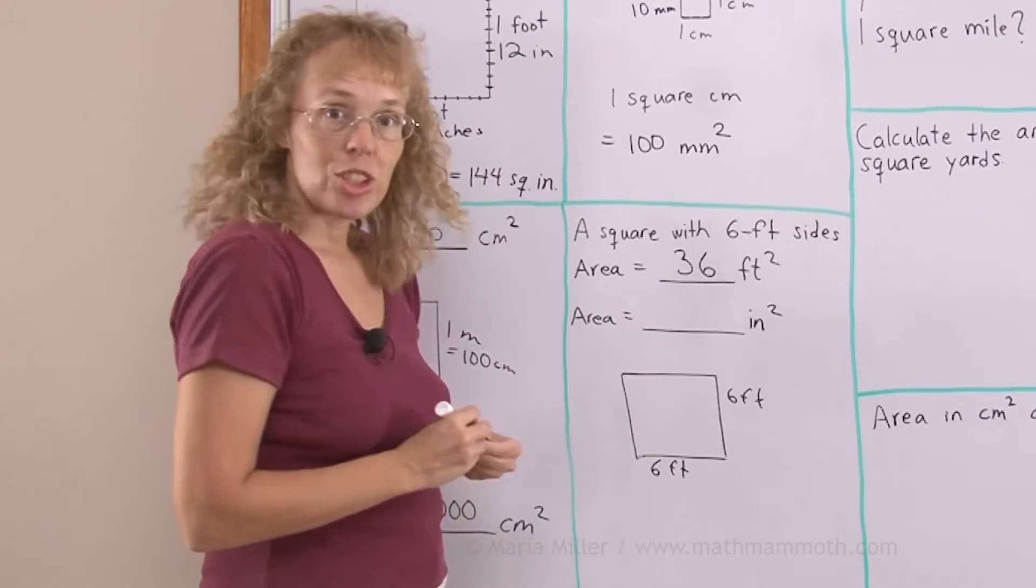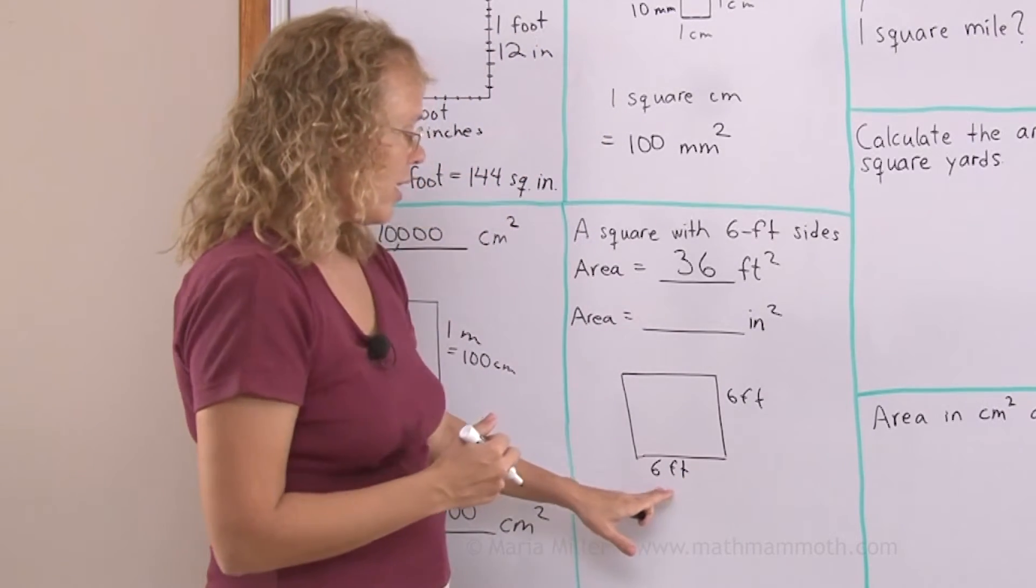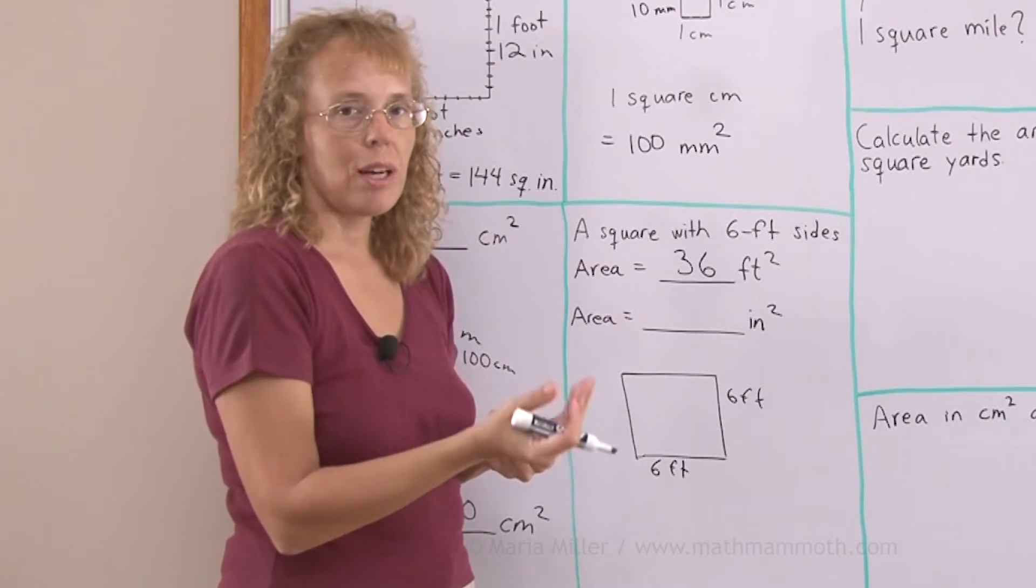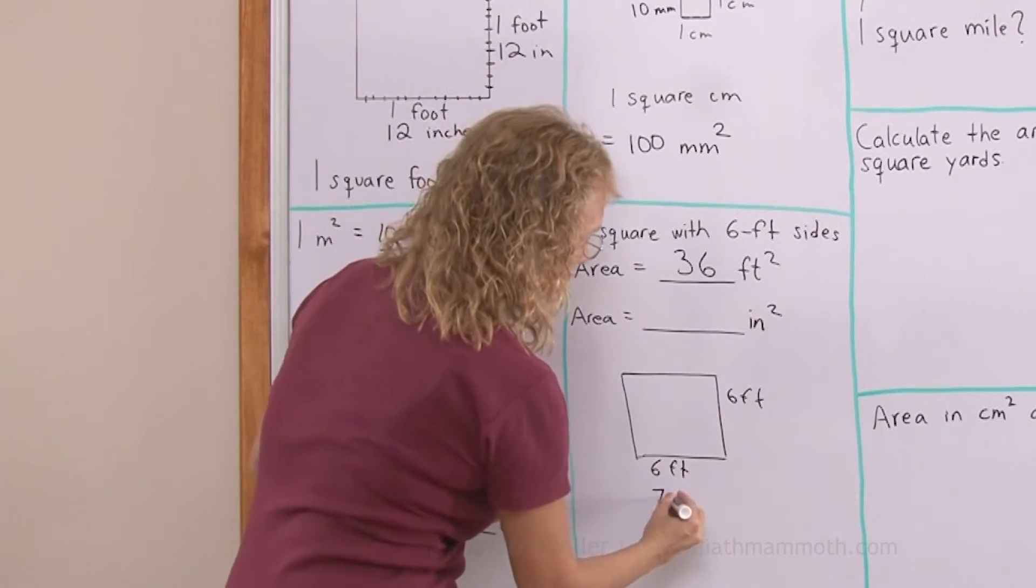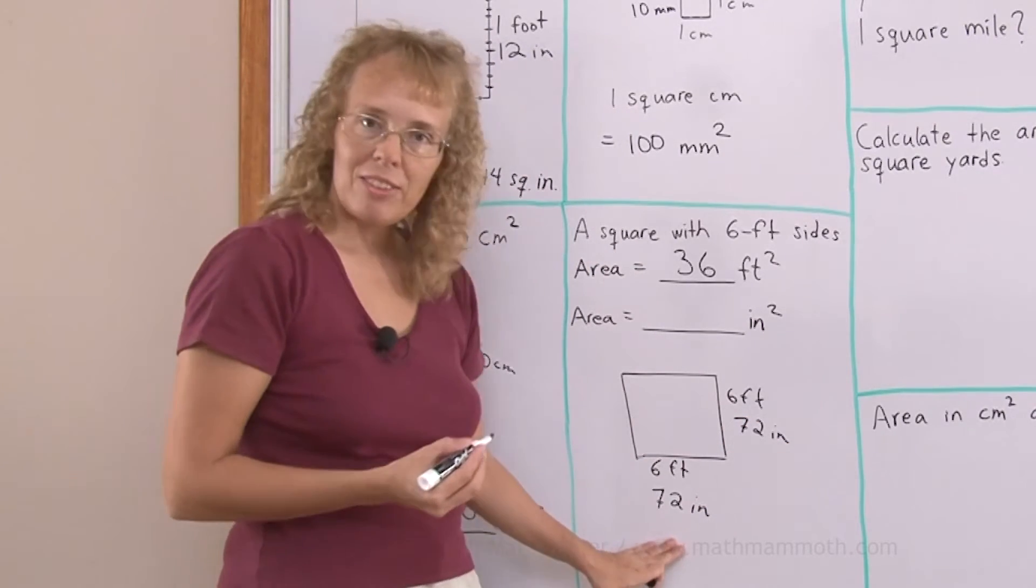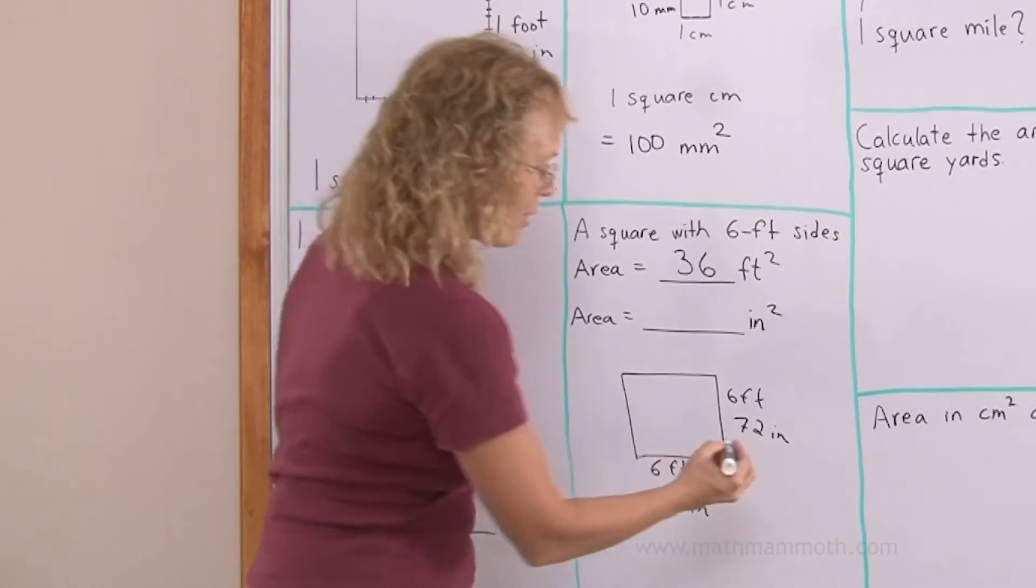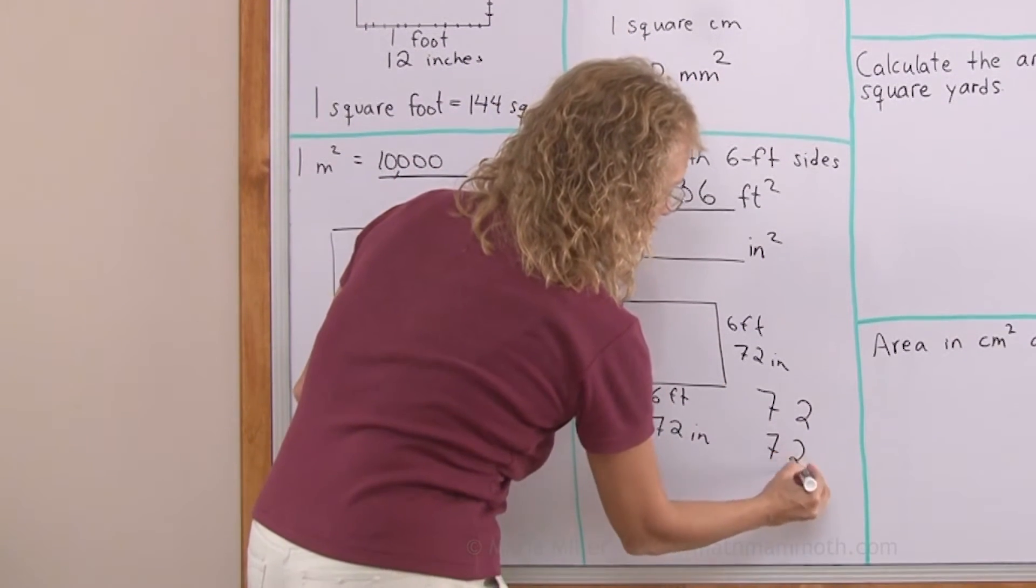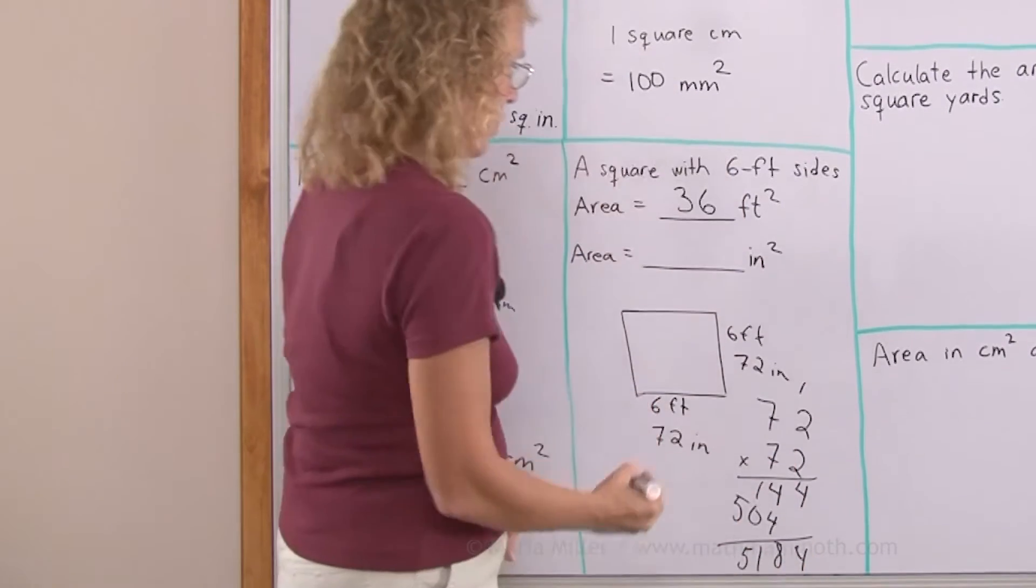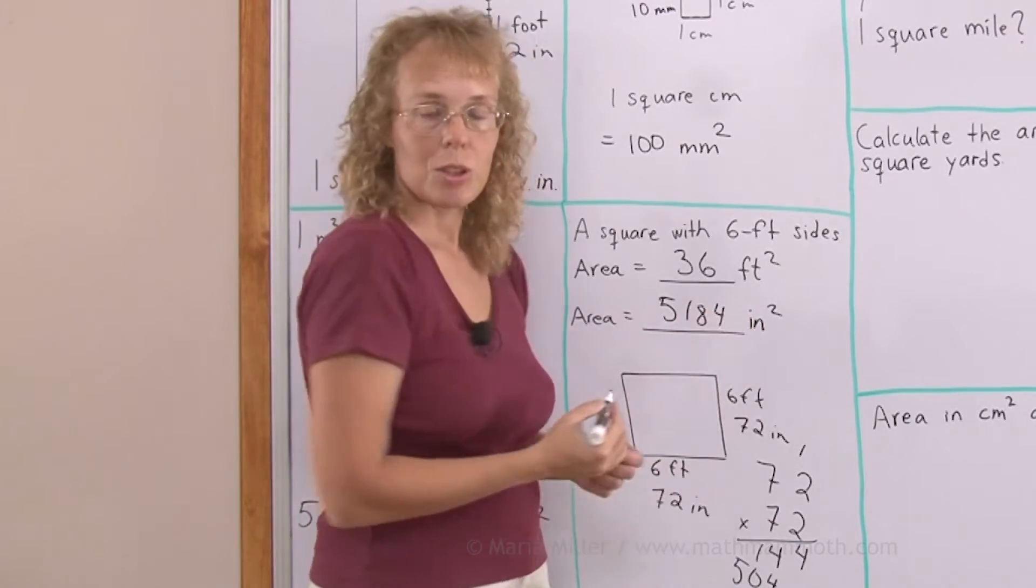Now in inches, I do the same. I will think how many inches this side is. Each foot is 12 inches. Six feet is six times 12, seventy-two inches. So I will multiply 72 times 72 to get the area in square inches. 72 times 72 is 5,184 square inches.